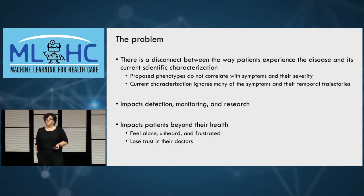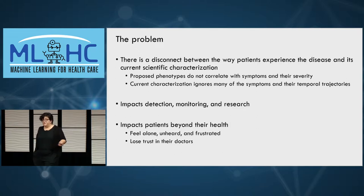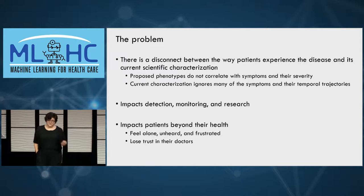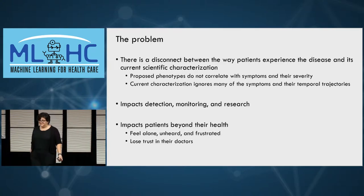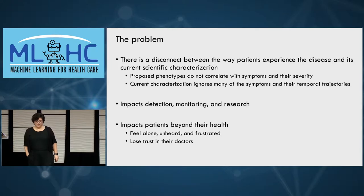The current characterization seems to ignore all of the symptoms and their temporal trajectories in particular, which has critical implications. It impacts detection, monitoring, and research because we don't have the data to identify all these symptoms. But it also impacts patients beyond their health. What we find when we talk to endometriosis patients is that they have basically lost their trust in the medical system — they feel alone, unheard, and frustrated.